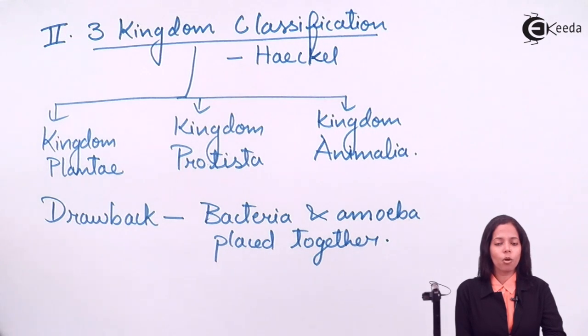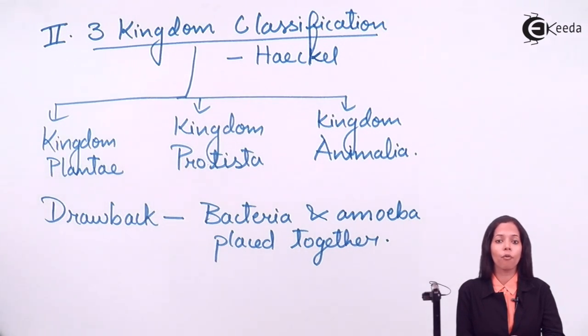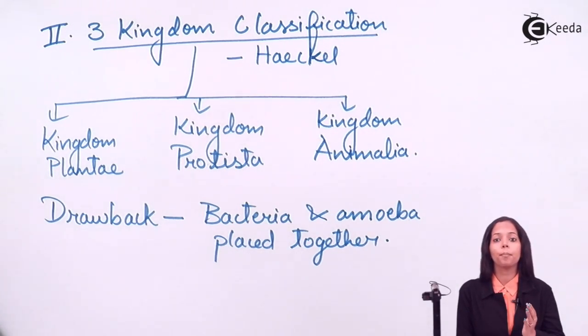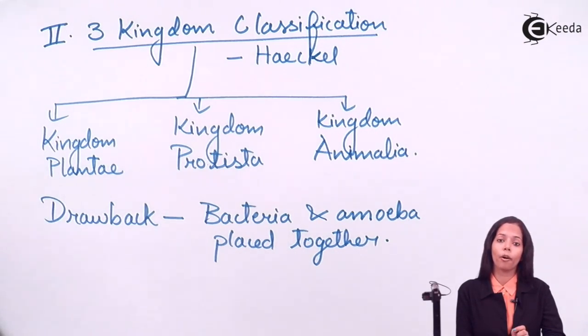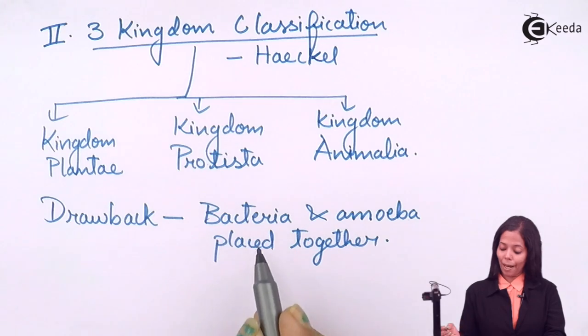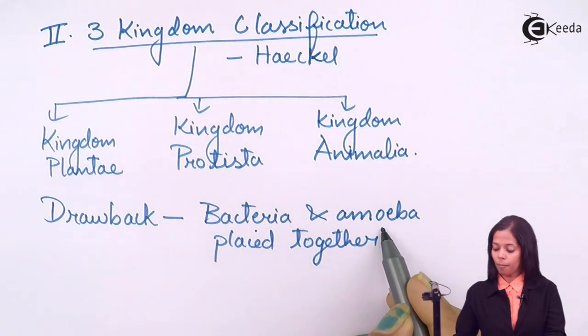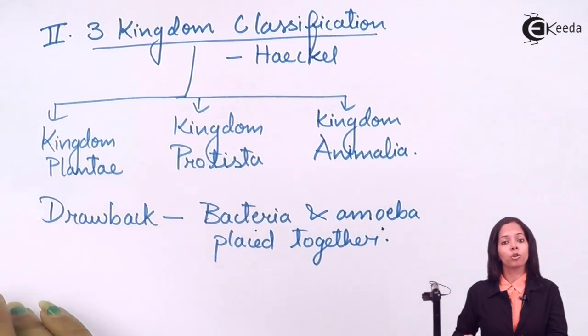After observing this drawback, a third scientist introduced a fourth kingdom. He separated prokaryotic and eukaryotic unicellular organisms — bacteria is prokaryotic and amoeba is eukaryotic. The scientist Copeland introduced the fourth kingdom, and this resulted in the formation of the next system: the four-kingdom classification.